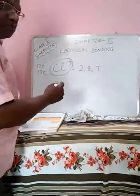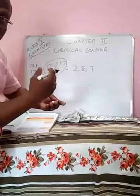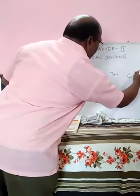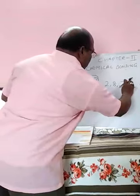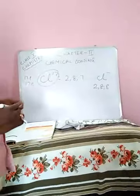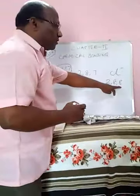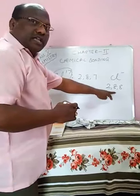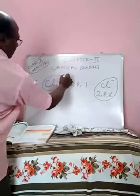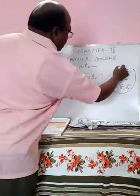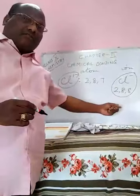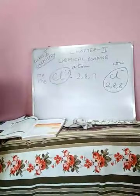You cannot lose 7 electrons — it is very difficult. But chlorine can gain one electron, which is easier. So it will gain one electron and become Cl⁻. The electronic configuration becomes 2, 8, 8. It has obtained a noble gas configuration. So Cl⁻ is an ion and the original Cl is an atom. This is an anion because it gains electrons.